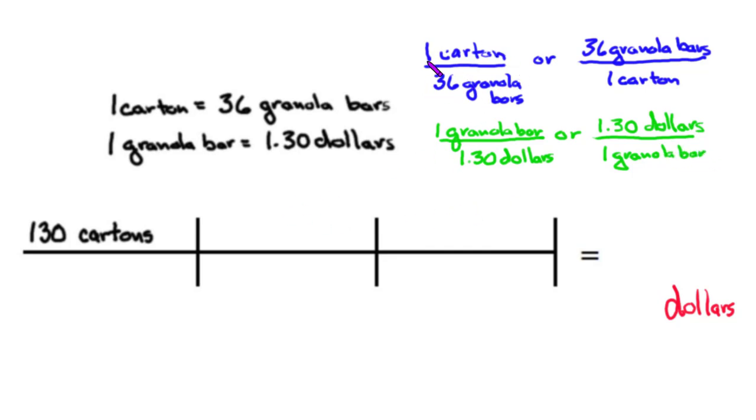Now it just becomes which one of these ratios do I put into my grid. I can see right here I have cartons, and so I'm going to pick the conversion factor that has cartons in the denominator because I want them to cancel. So 36 granola bars over one carton. And I like this because now I can get cartons to cancel with cartons, leaving me in granola bars.